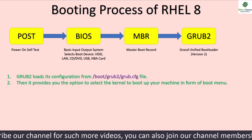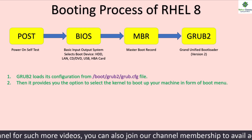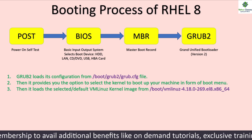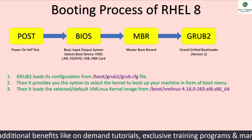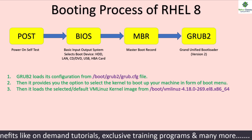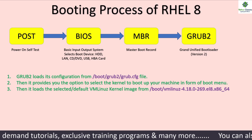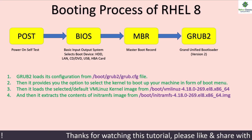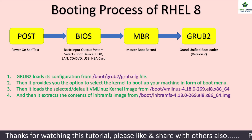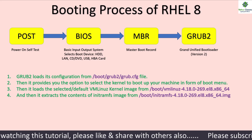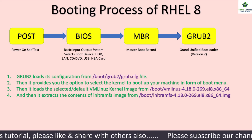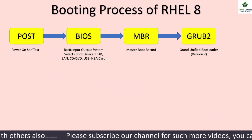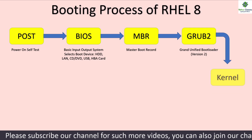Grub2 provides the option to select the kernel to boot up your machine in the form of a boot menu. It then loads the selected or default vmlinuz kernel image from /boot/vmlinuz-4.18 or higher, and then extracts the contents of the initramfs image from the /boot partition. Once the initramfs and the kernel are loaded into memory, Grub hands over control to the kernel.